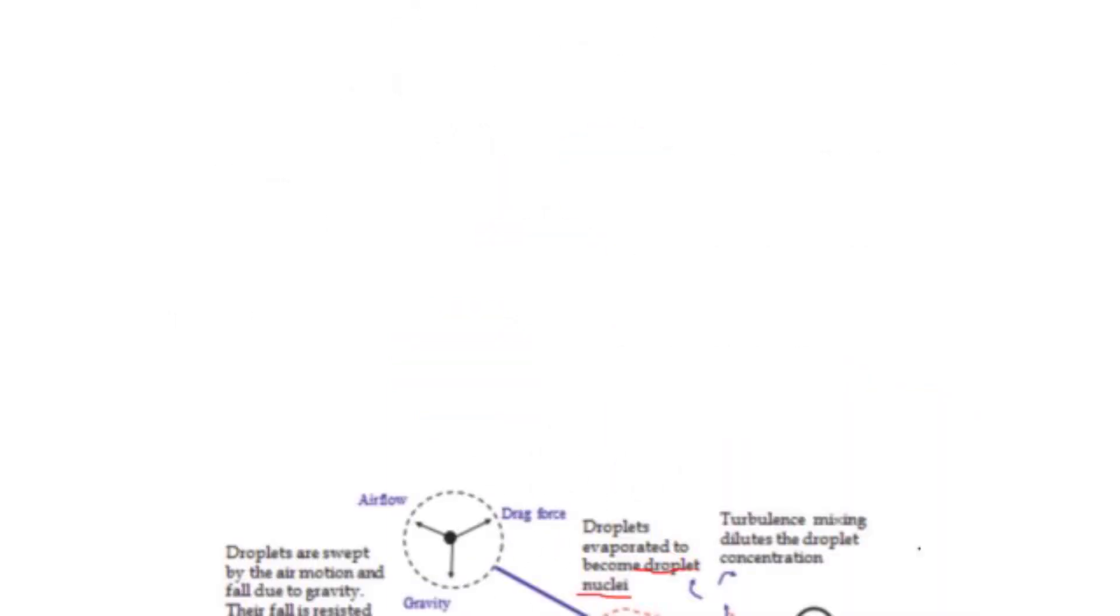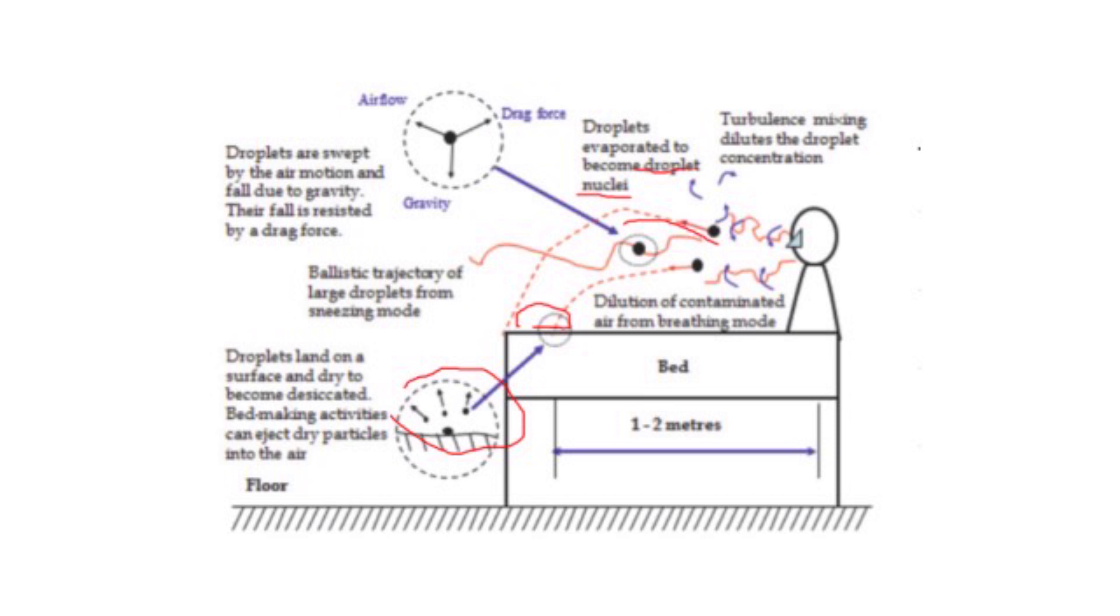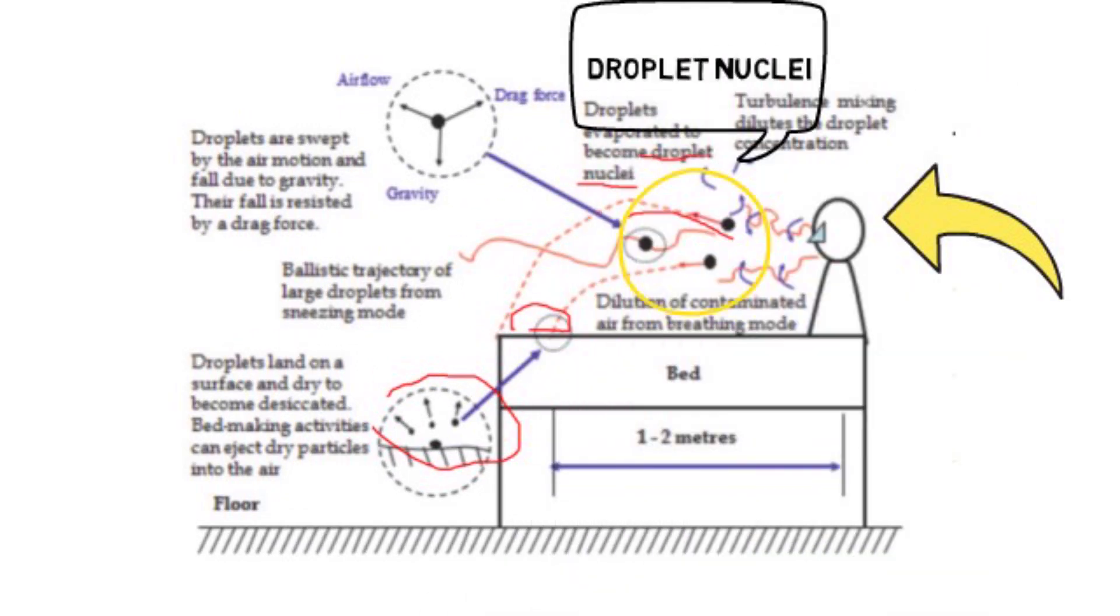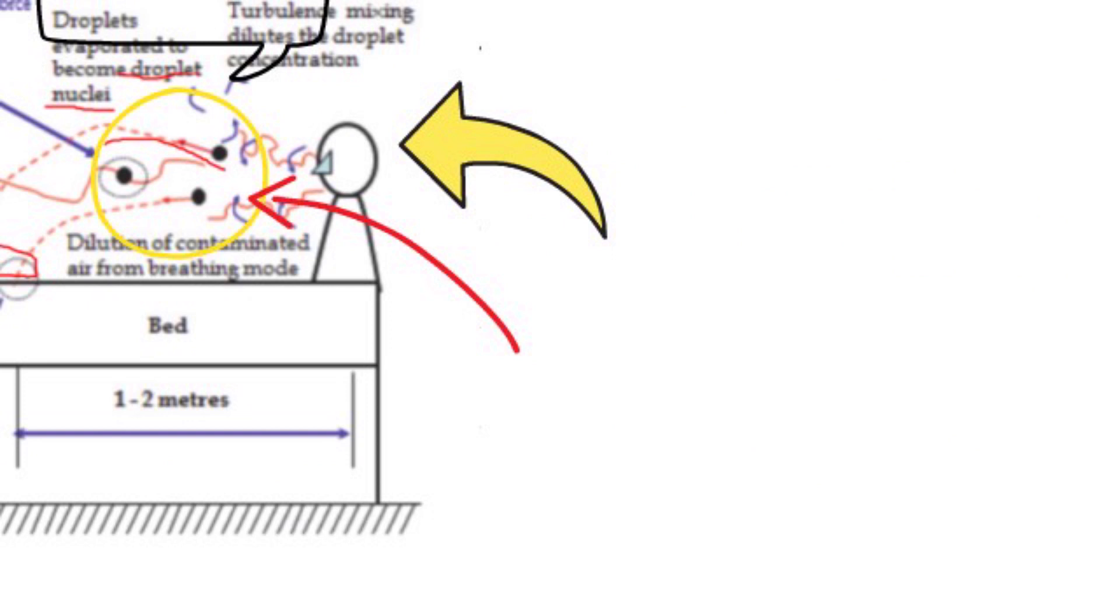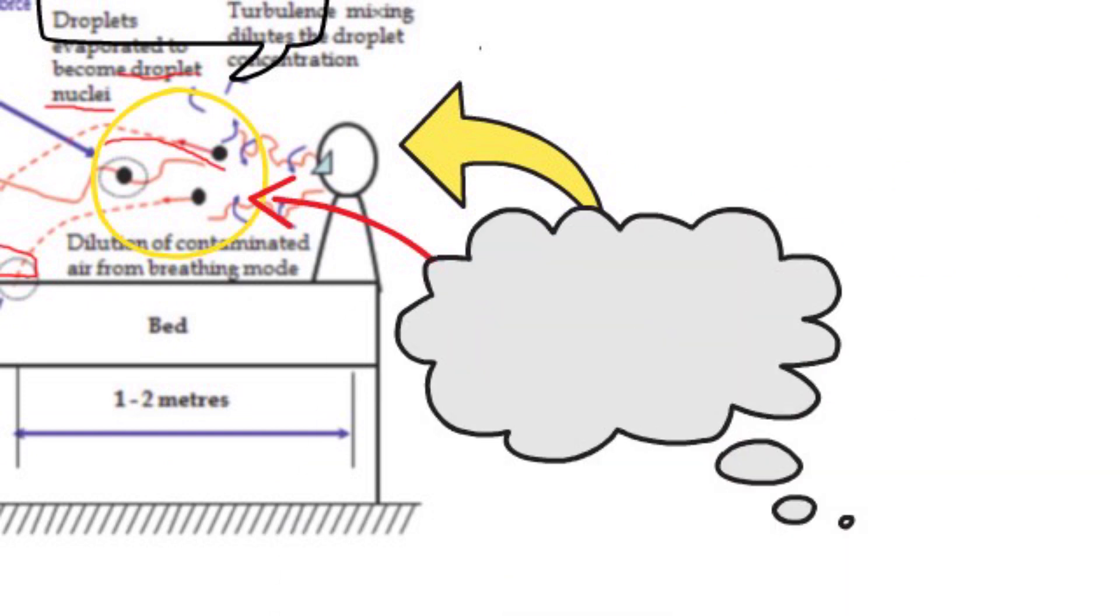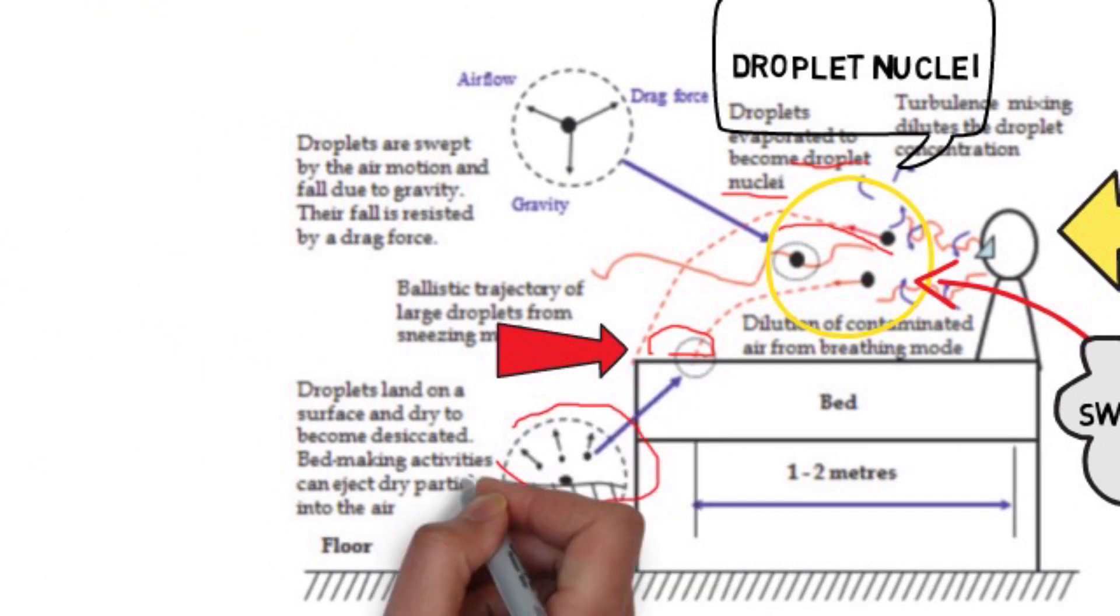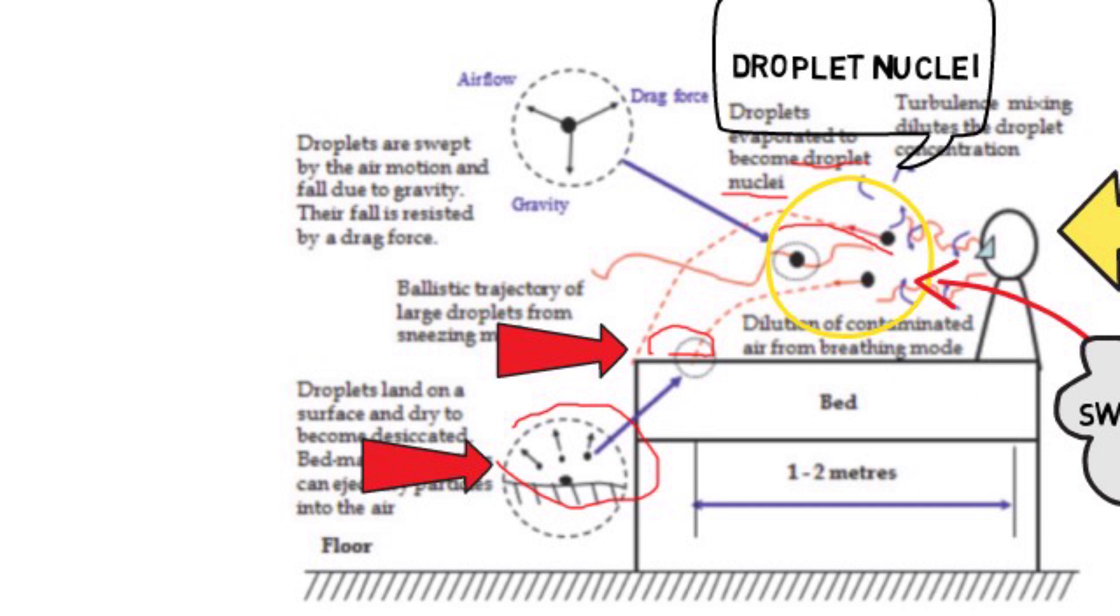Let's first look at how viruses transmit through respiratory droplets. An infected patient can generate respiratory droplets by coughing and sneezing. These droplets evaporate to become much smaller droplet nuclei with less than 5 micrometers in diameter. They are small enough to be swept by the air motion to places further away. These droplets and droplet nuclei eventually fall due to gravity and land on a surface and become desiccated.